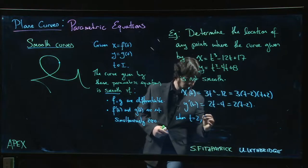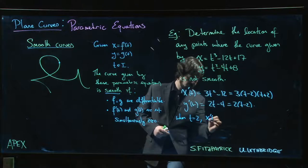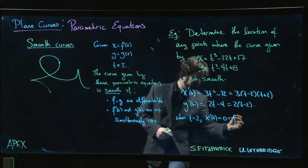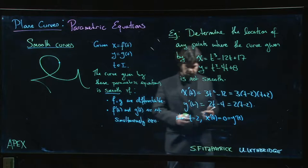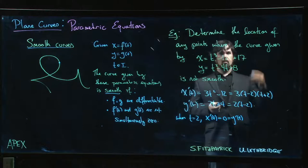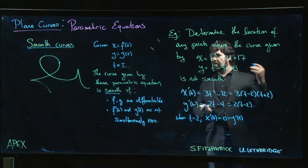We can see that when t equals 2, we get that x prime of 2 equals zero and so is y prime of 2. X prime of t and y prime of t, they're both zero at 2. So what is the point on the curve? What's the location?